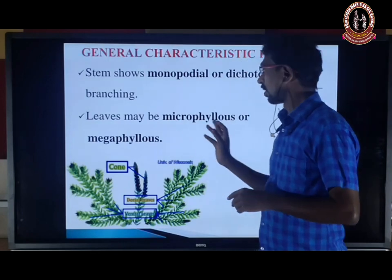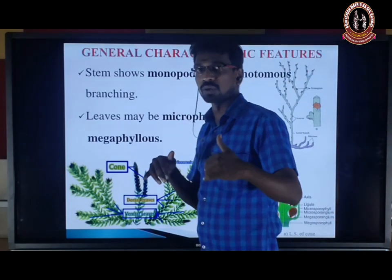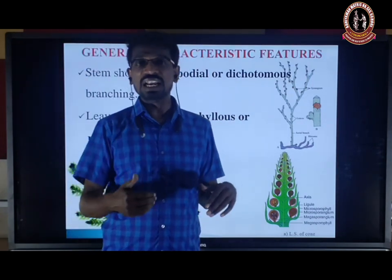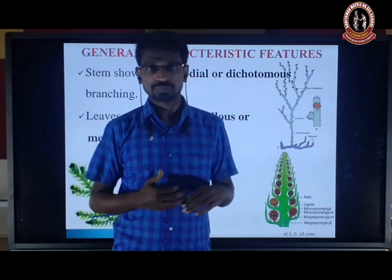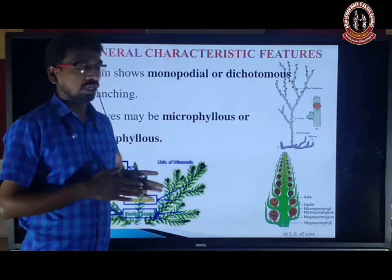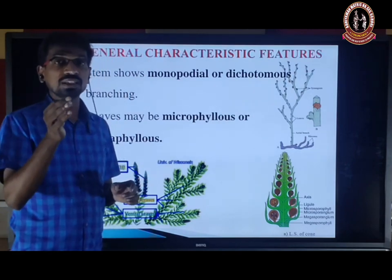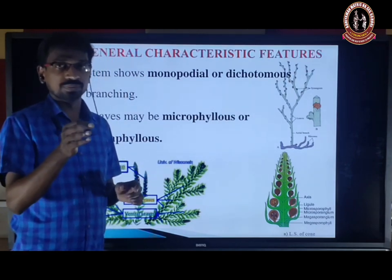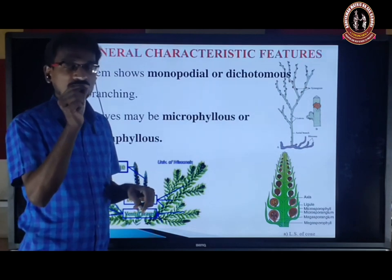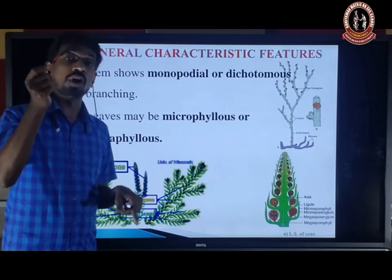The leaves may be microphylls or megaphylls. There are two types of leaves: scale leaves and foliage leaves. Microphylls are minute or small leaves. Megaphylls are large leaves.